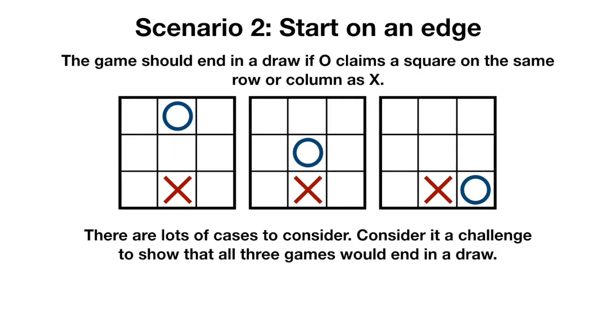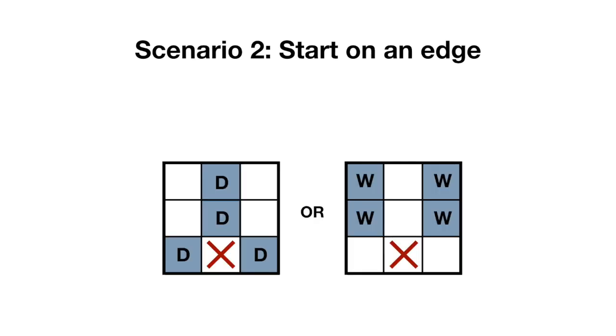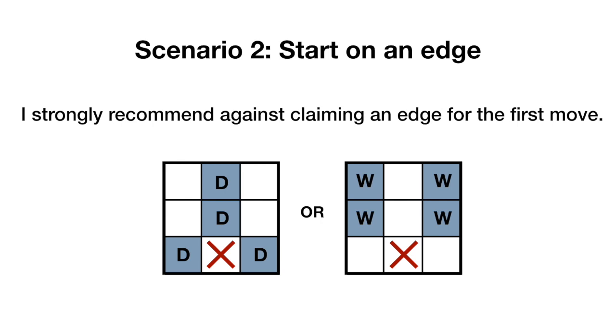If O plays in the same row or column as x, the game should end in a draw. There are so many cases to consider here that we're going to skip them in this video, otherwise it would be twice as long. Consider it a challenge to show that all three of these games would end in a draw. When x starts with an edge square, there are so many ways to mess up and lose the game that I strongly recommend against claiming an edge for the first move, though it's still an interesting case to consider.